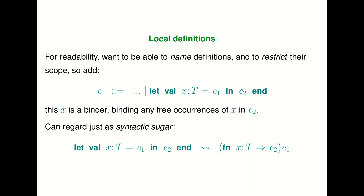So far in L2 we have assignment, dereference, sequencing, looping, and conditionals as the imperative core of the language, and then to support functions we added lambda abstractions, applications, and variables. If you look at a program written in a language like OCaml or Java, you get variables from function parameters, but you also get variables in scope with local definitions. So what we'll do first is see how we can add local definitions to L2.